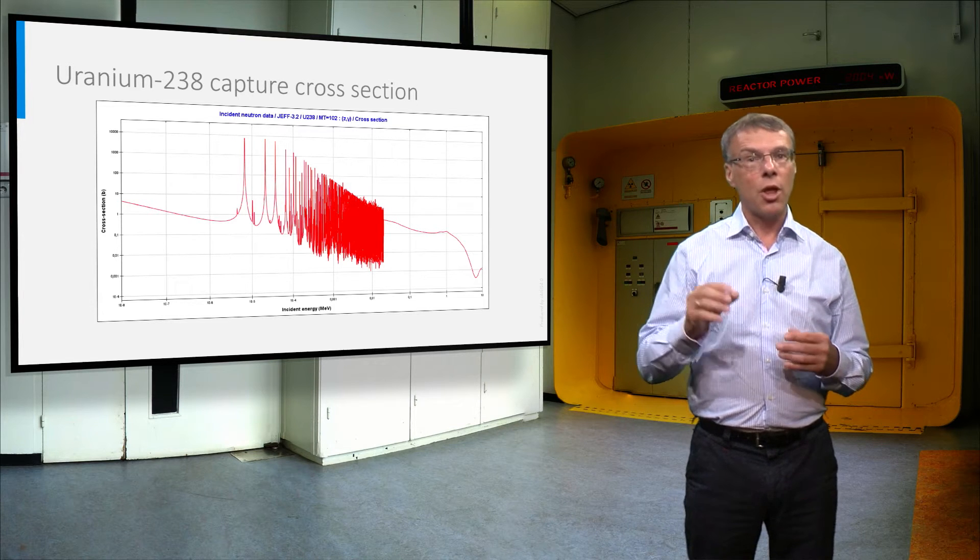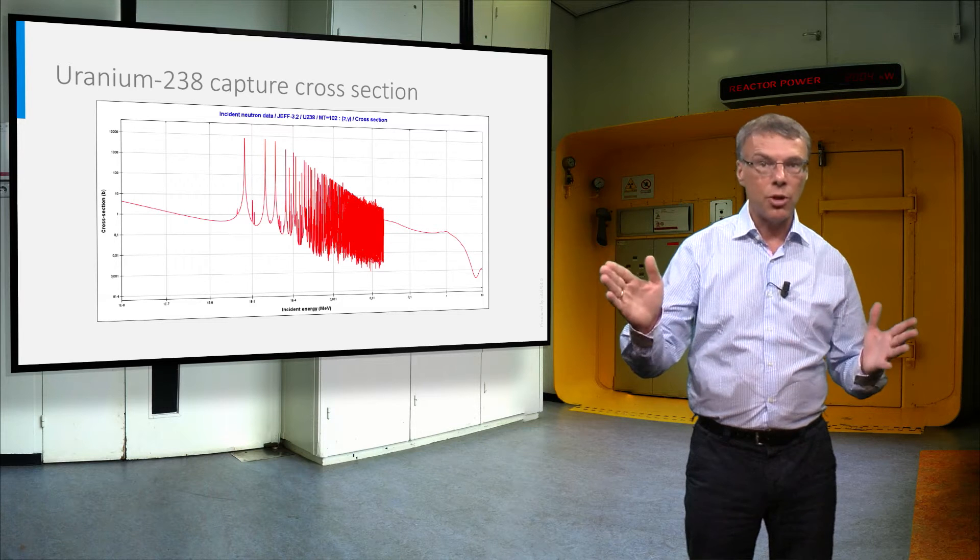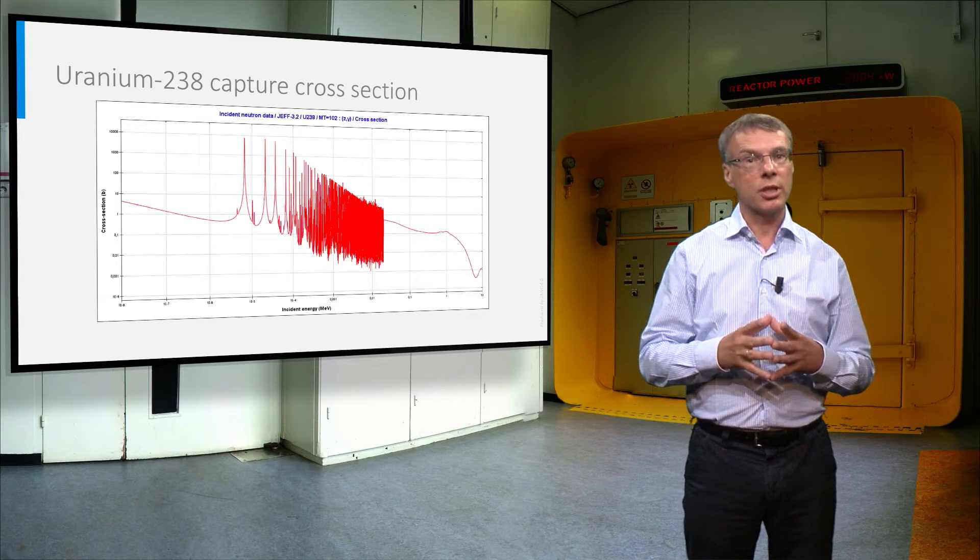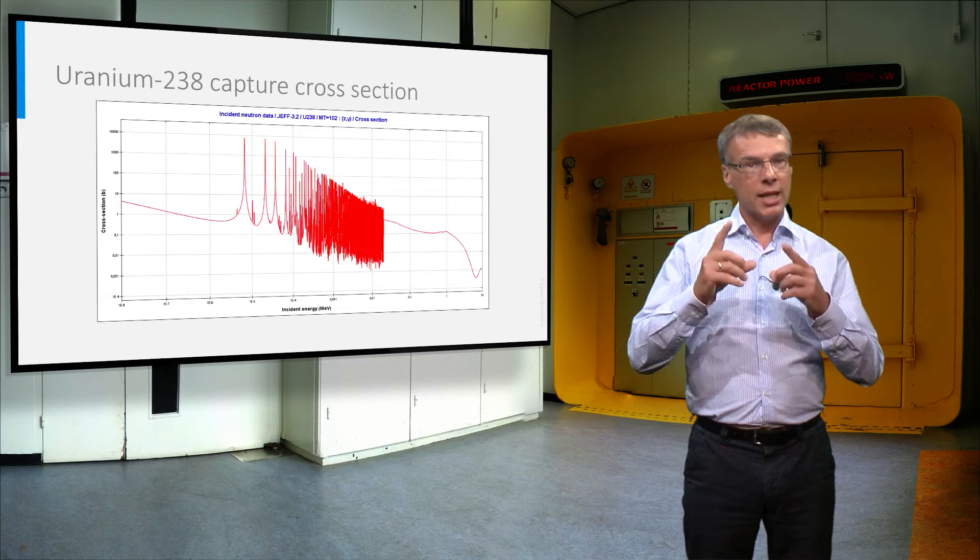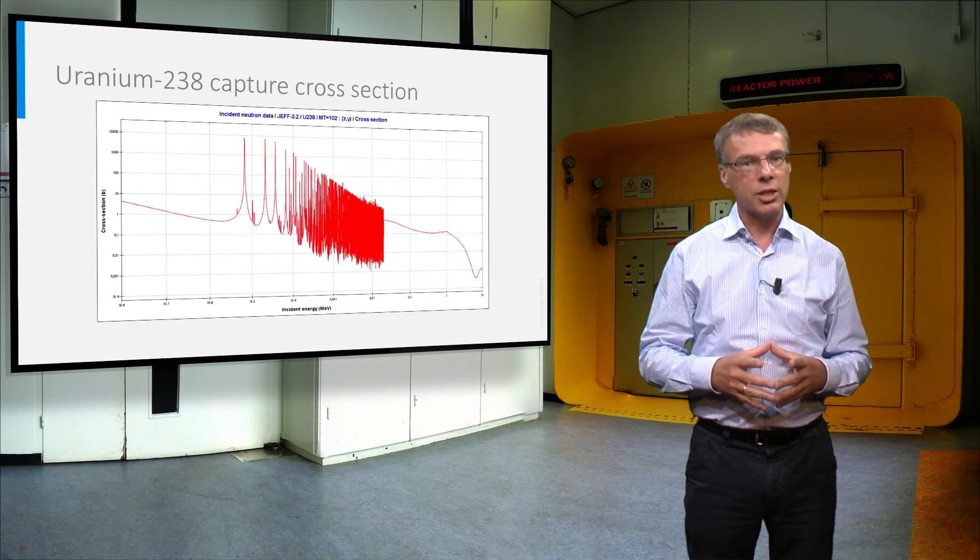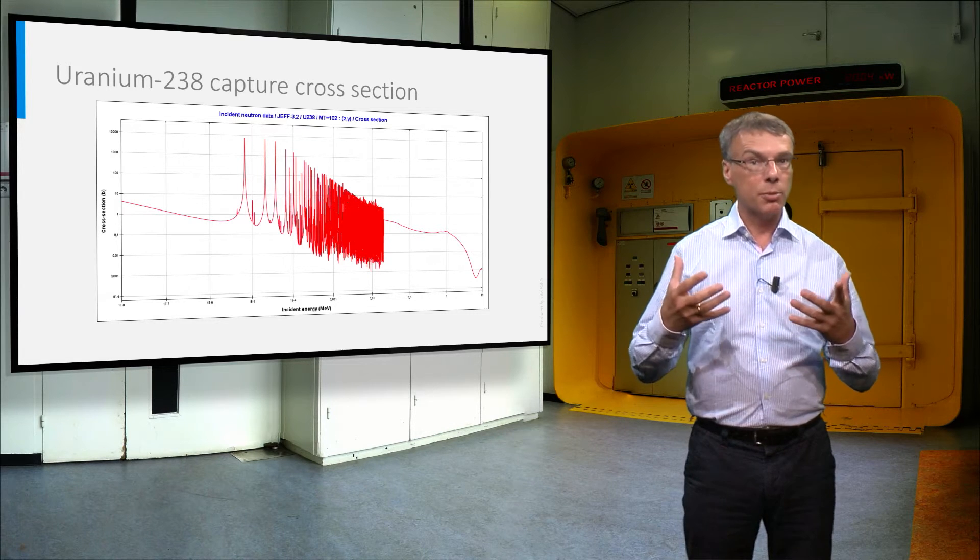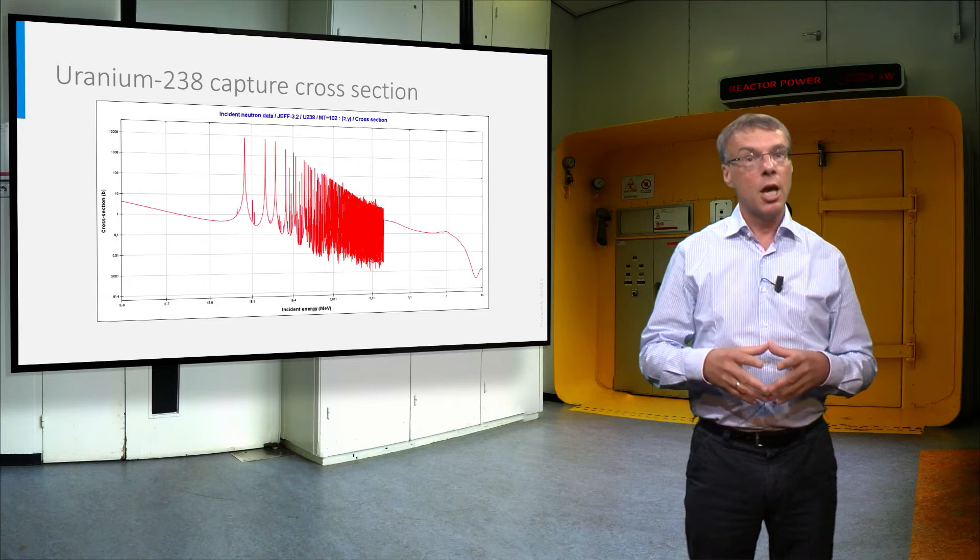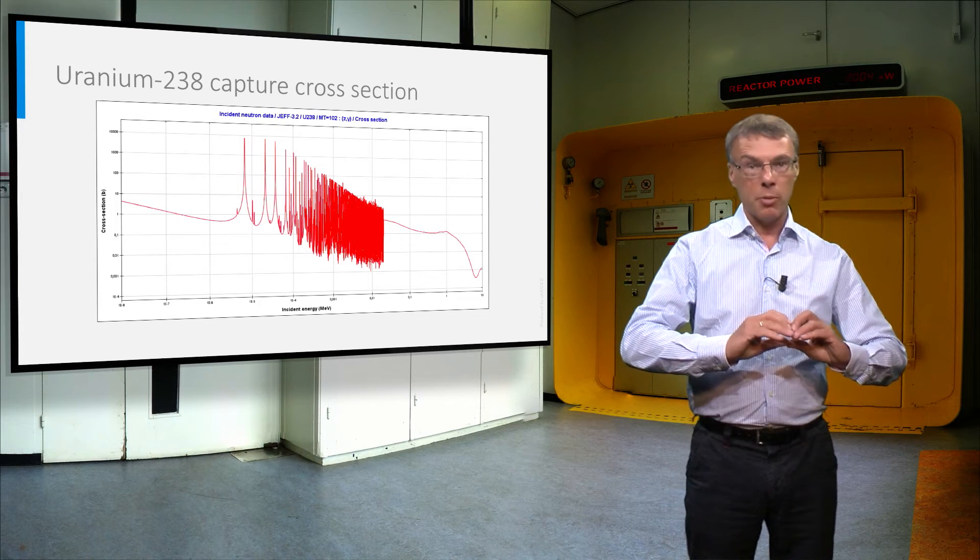They have to travel through the energy range in which uranium-238 has many resonances. And when a neutron has energy in the peak of one of these resonances, the probability it will be absorbed is very high, while for other values this probability is very low.